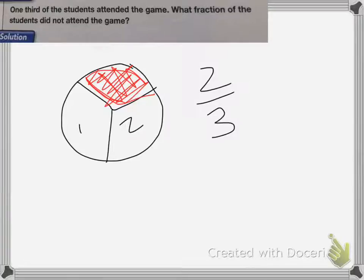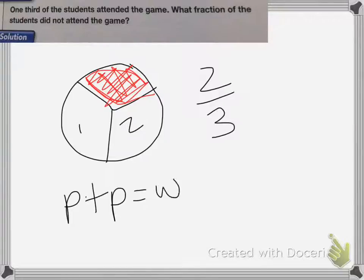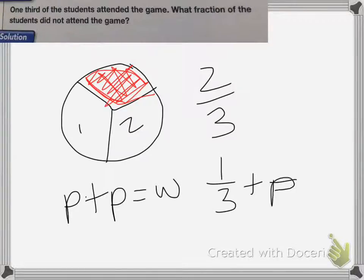If we did that with math, we would say that part of something plus another part equals the whole. So here I had one-third plus something equals my whole, which would be three-thirds. And the answer is two-thirds.